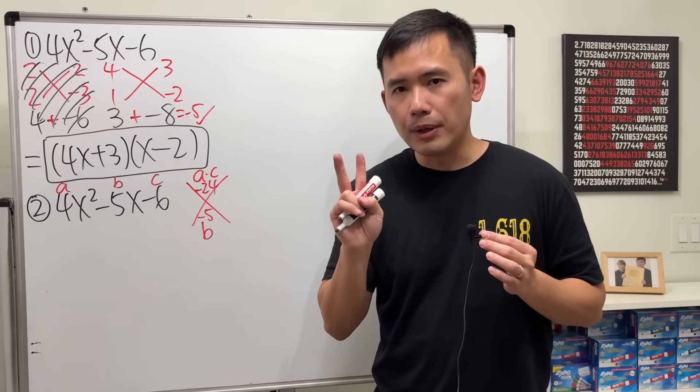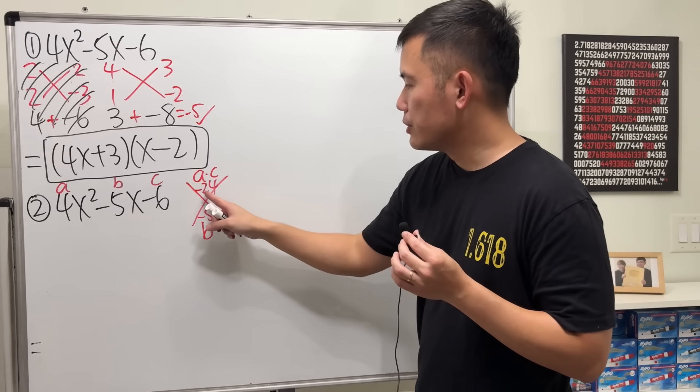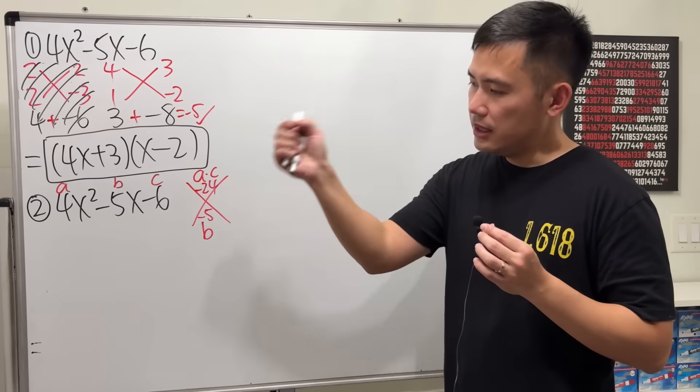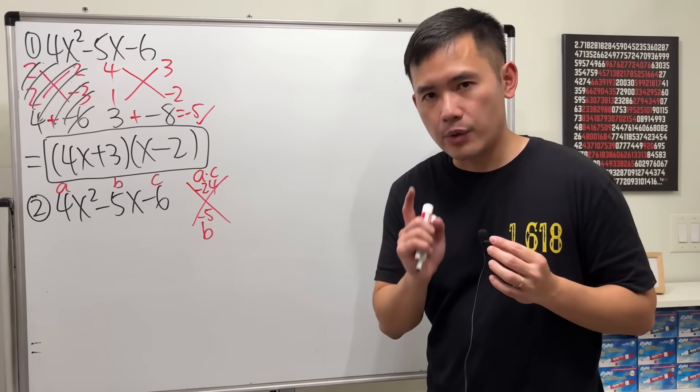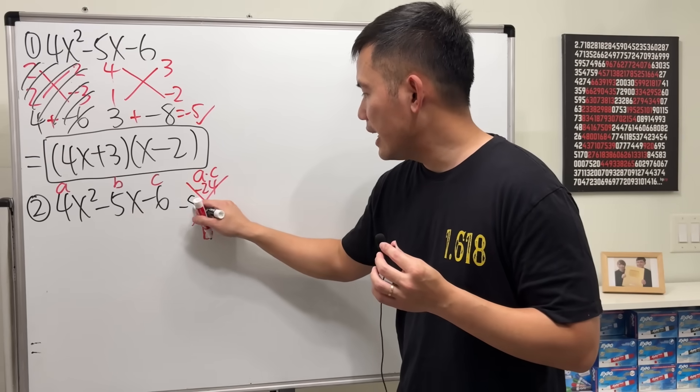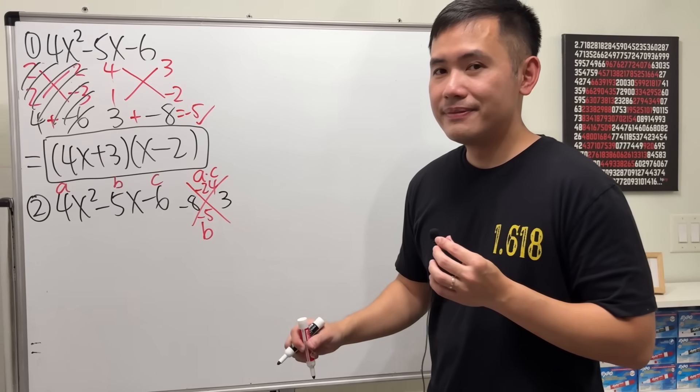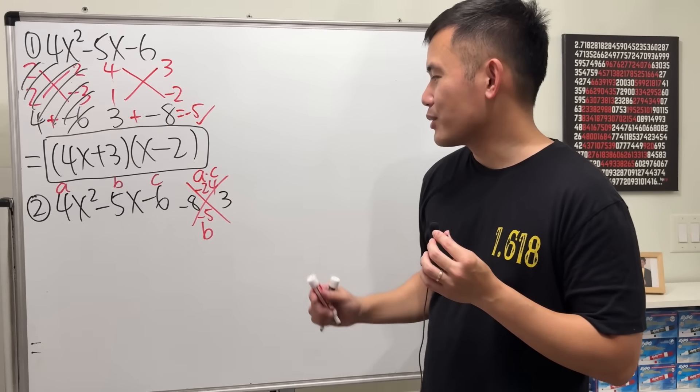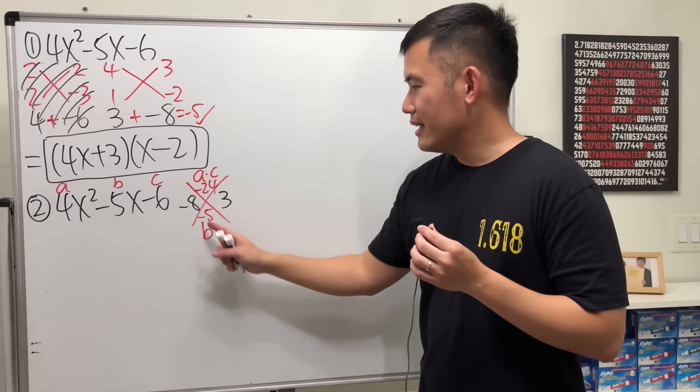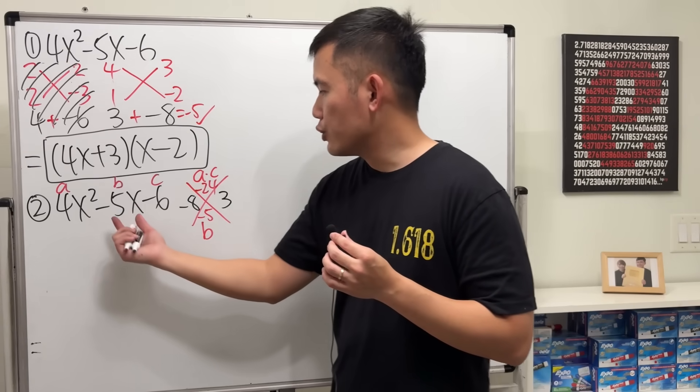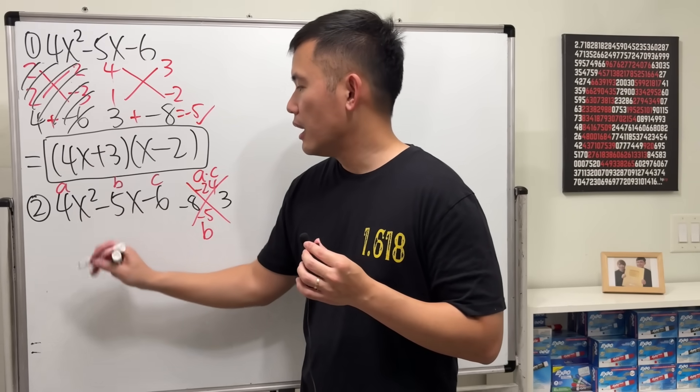Now, we have to think about two numbers. First, they multiply to negative 24. And together, we add them up. We need to get negative 5. The correct combination for that is negative 8 and 3. Negative 8 times 3 is negative 24. Negative 8 plus 3 is negative 5.